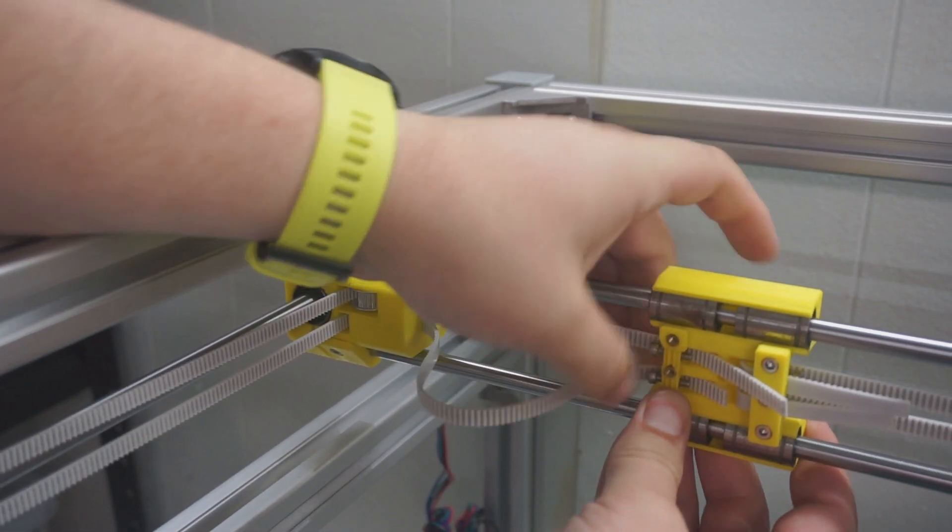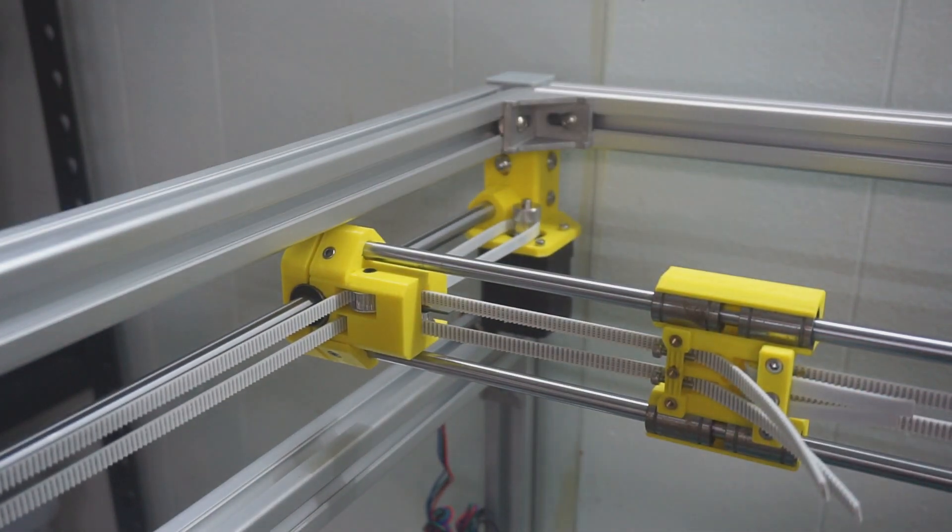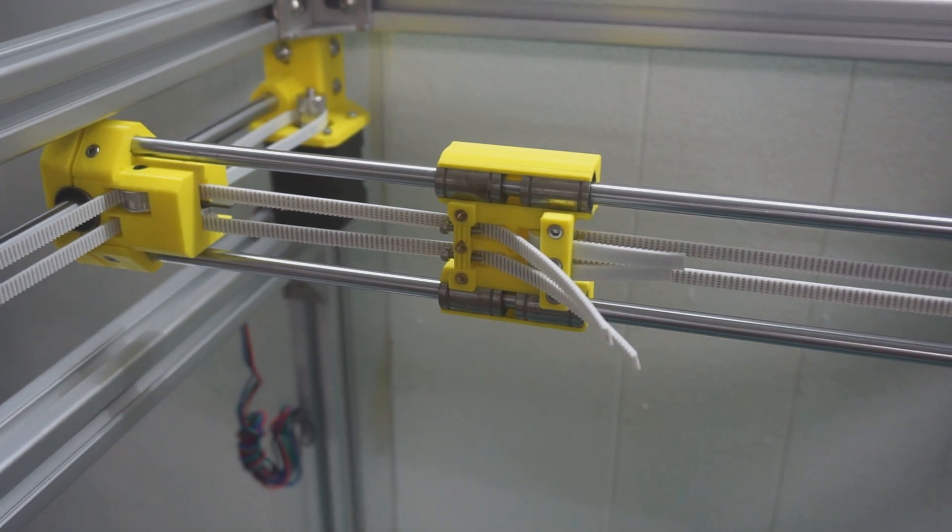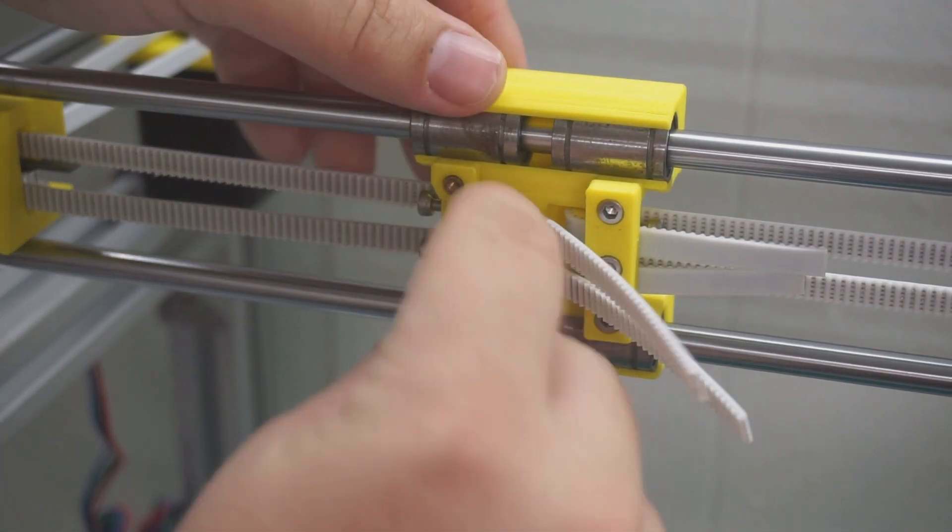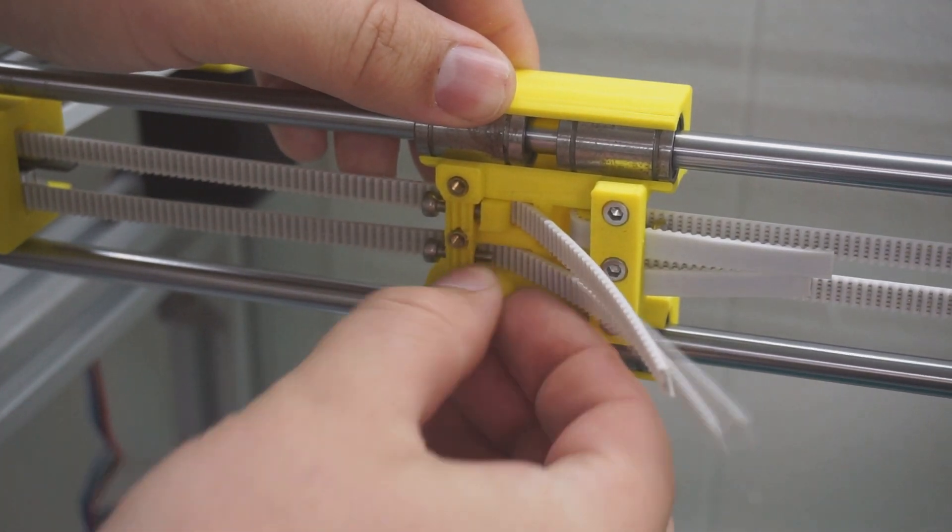Then back around the smooth pulley and into the XY gantry. At this point we want to pull the belts tight so that there's no slack. Then we insert the little tensioning pieces.